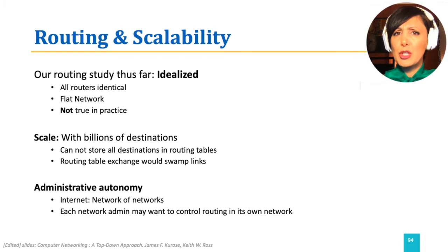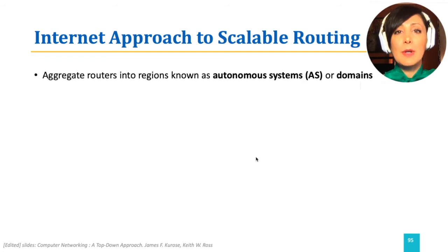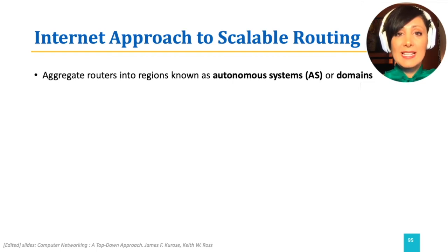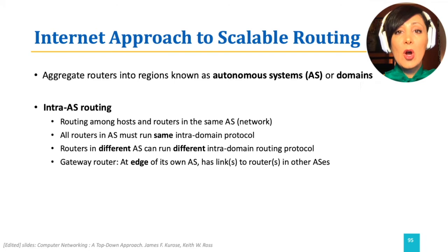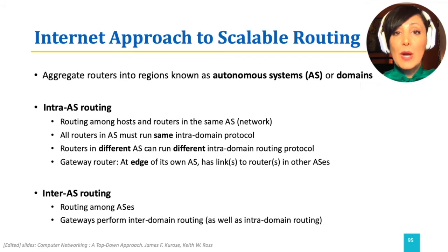What should we do? These problems could be addressed through organizing the routers into autonomous systems, or domains. For each autonomous system — which we will call AS from now on — we can define the routing within the AS differently than the routing among ASs. We call within-AS routing intra-AS routing, and routing among ASs inter-AS routing, and manage them in different ways.